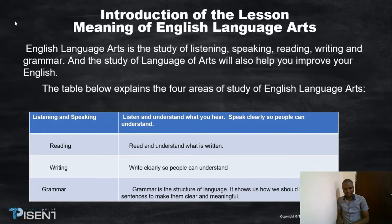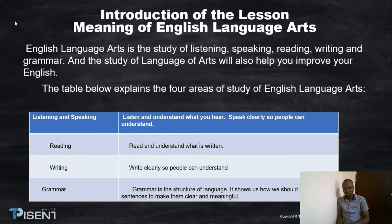English language arts is the study of speaking, reading, writing and grammar. The study of English language arts will also help you to improve your English. The table below explains the four areas of studying English language arts.